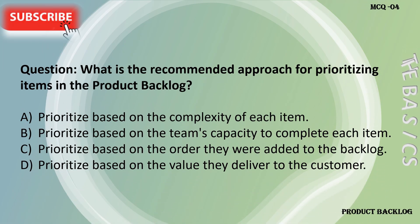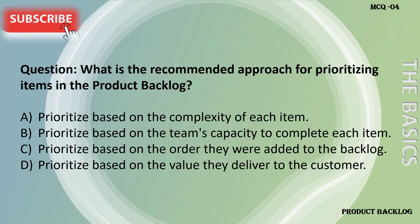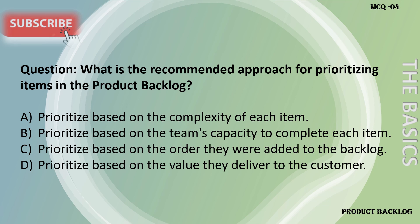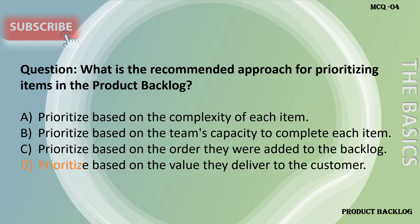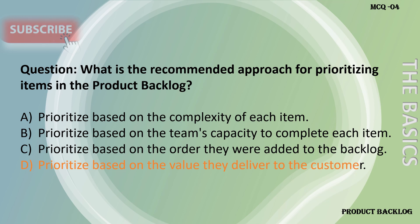What is the recommended approach for prioritizing items in the product backlog? A. Prioritized based on the complexity of each item. B. Prioritized based on the team's capacity to complete each item. C. Prioritized based on the order they were added to the backlog. D. Prioritized based on the value they delivered to the customer.